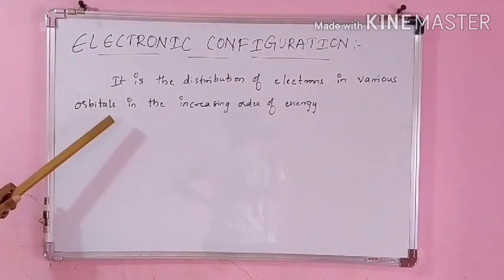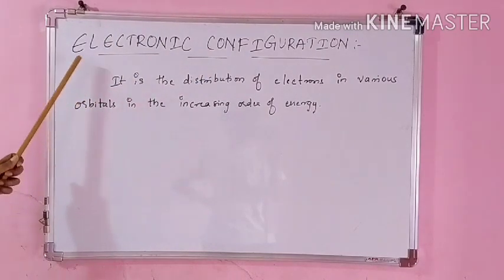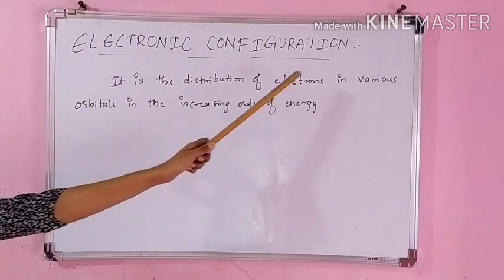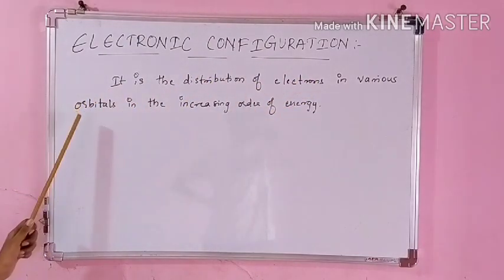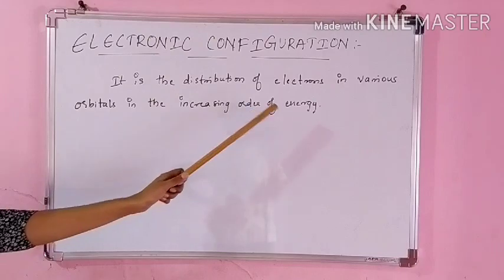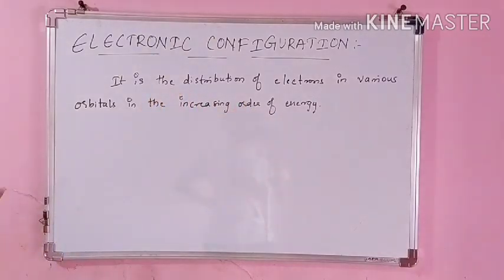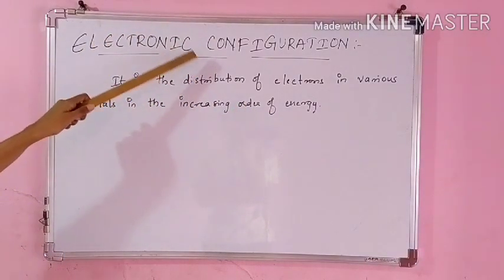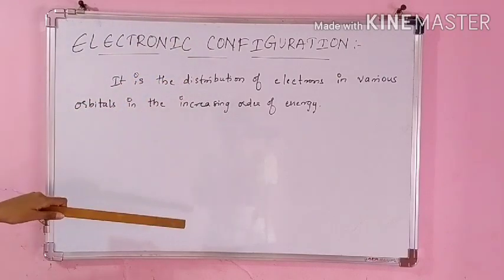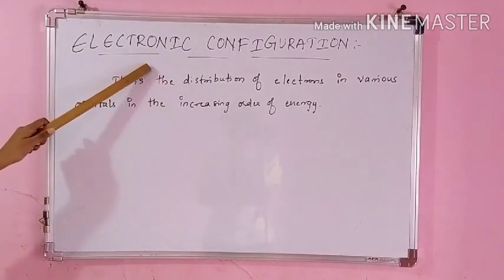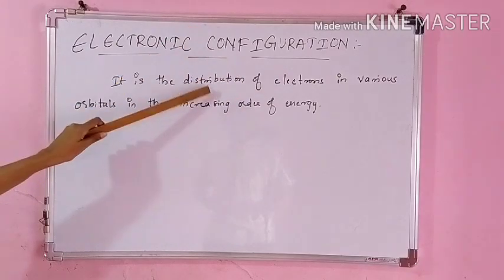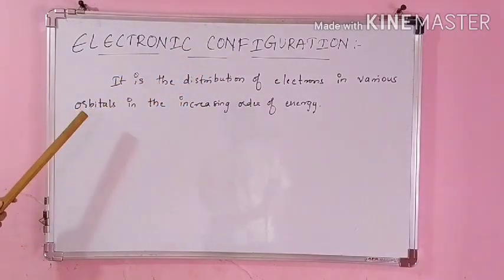Let us understand what is the definition of electronic configuration, and then we will move on to how to write the electronic configuration. It is the distribution of electrons in various orbitals in the increasing order of the energy. So, electronic configuration — we are supposed to write this for any of the elements in the periodic table. It states the distribution of electrons, how your electrons have been arranged in various orbitals.